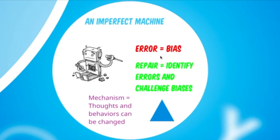This beautiful evolutionarily designed piece of machinery controls all our behaviors and physiological processes. But guess what - it's made by evolution, so it's imperfect. There are errors. We do not perceive the world with 100% accuracy, and at certain times it becomes so biased it can impact our effectiveness in interacting with our environment. We call these cognitive distortions, errors, or biases.